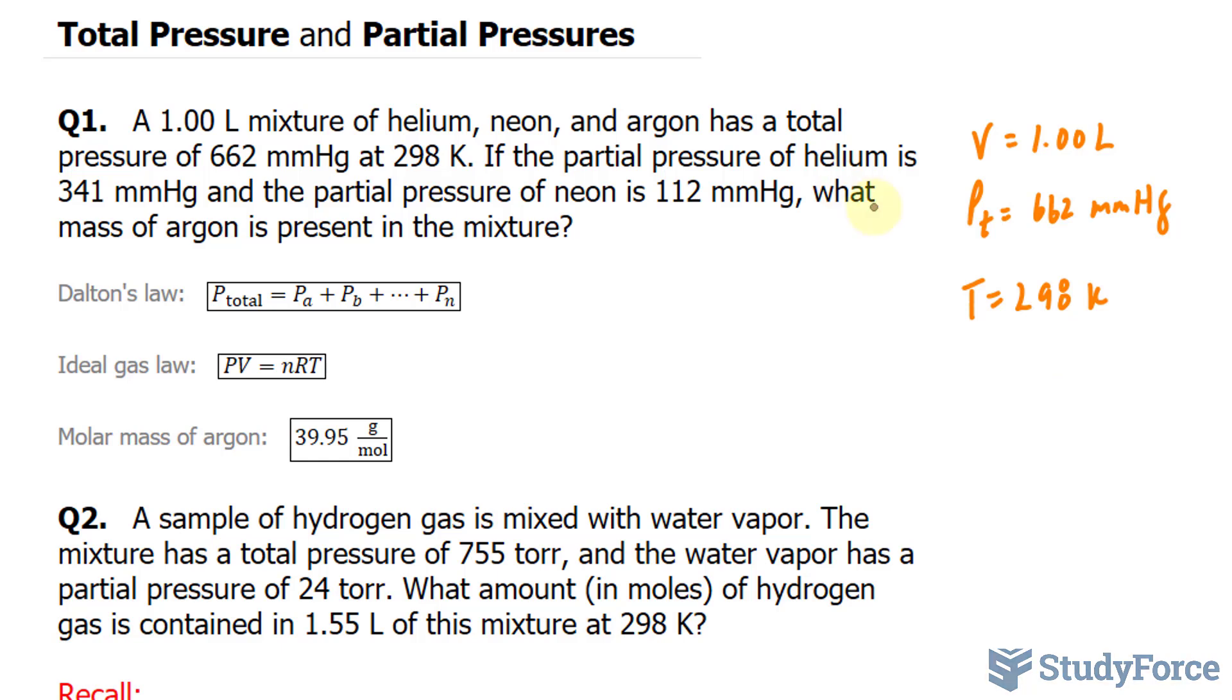The partial pressure of Helium, which I'll write as P_He, is equal to 341 mmHg. And the partial pressure of Neon is equal to 112. What they're looking for is the mass of Argon. So I'll write down mass of Ar. And I'll put a question mark.